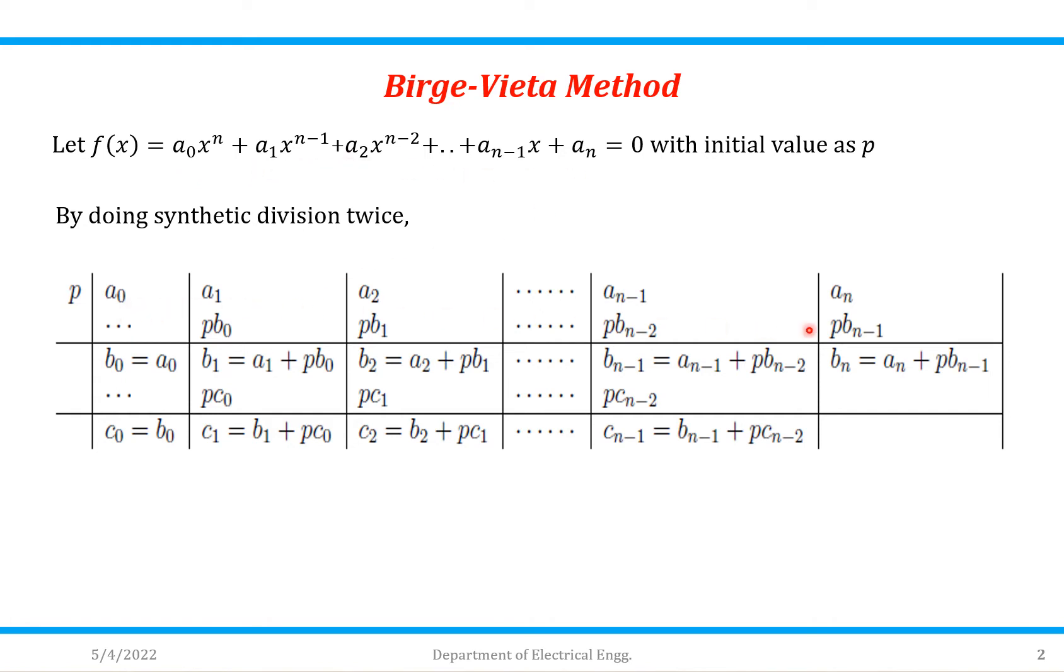I have written here coefficients with initial value as p. So this first value will be equal to a₀ as it is. Second one is a₀ into p. Now this a₀ is represented as b₀.